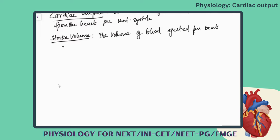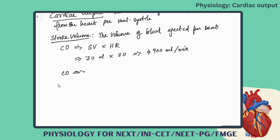When you want to calculate cardiac output, it is equal to stroke volume multiplied by heart rate. Normally the stroke volume is 70 ml multiplied by the heart rate of 70, so you get around nearly 4900 ml per minute. So the cardiac output approximately is 5 liters per minute.